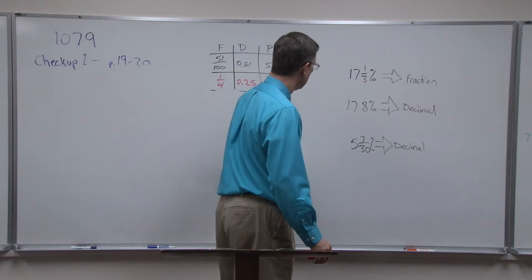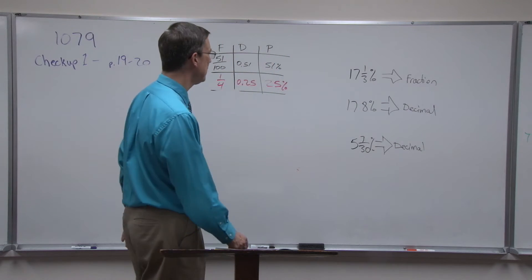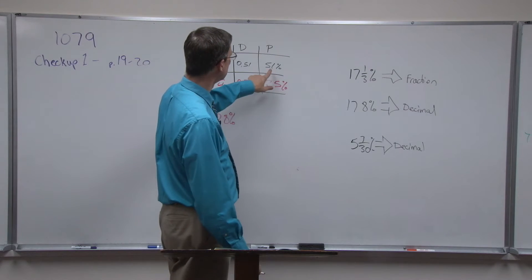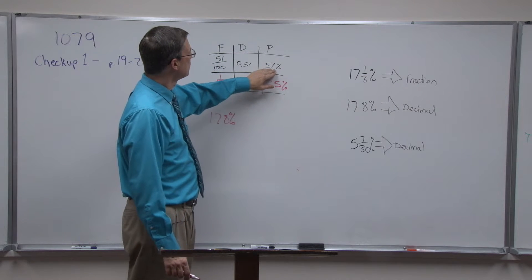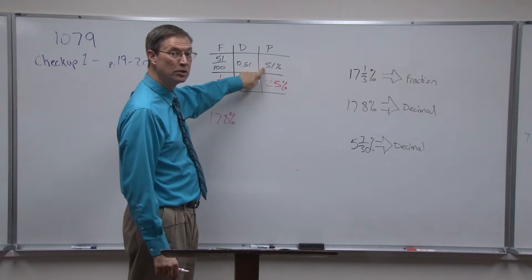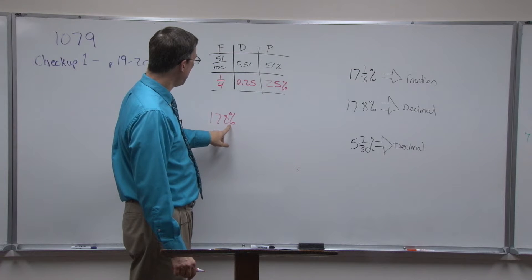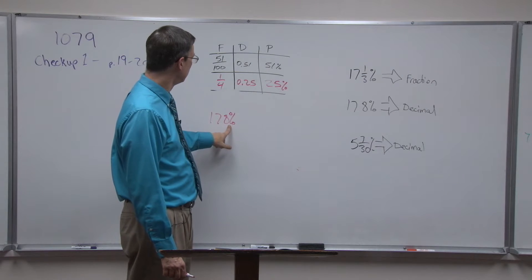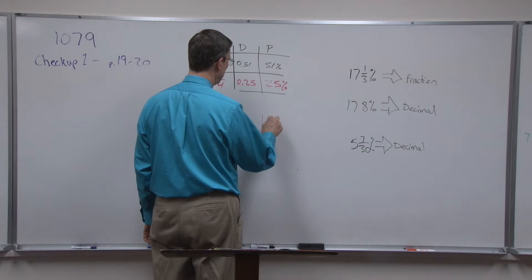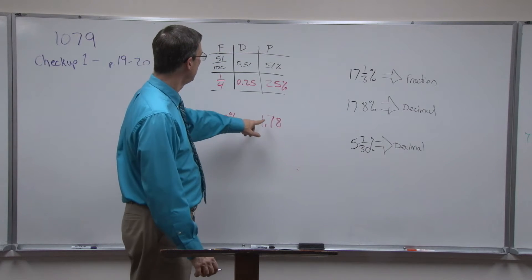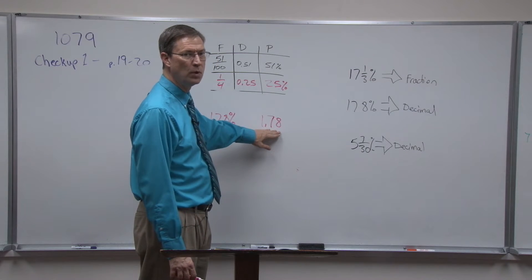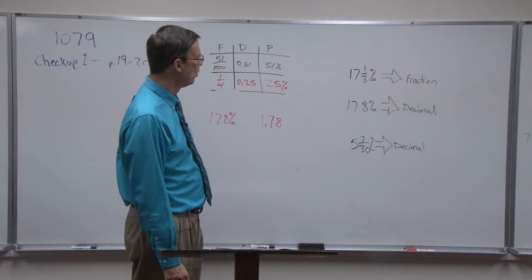Let's take 178% and write it as a decimal. From our reference numbers, going from percent to decimal we move the decimal twice — always twice. The decimal is at the end of 178 if you don't see it. Moving it twice gives 1.78, so 178% as a decimal is 1.78.